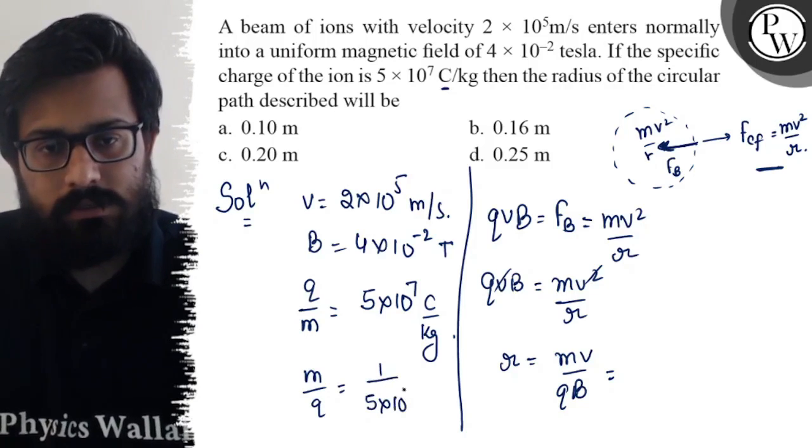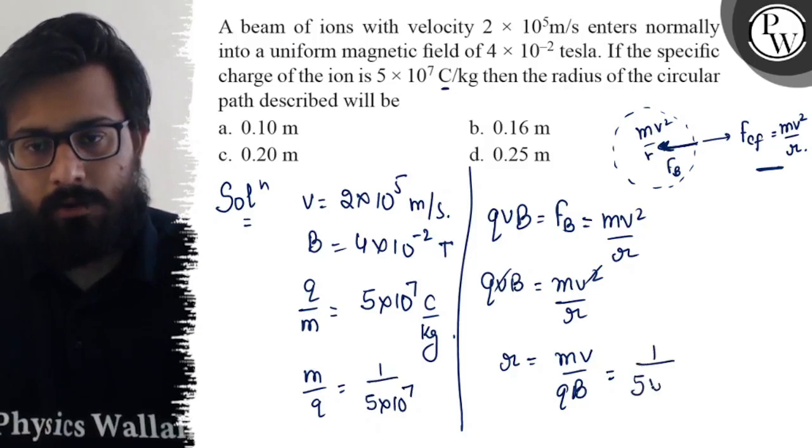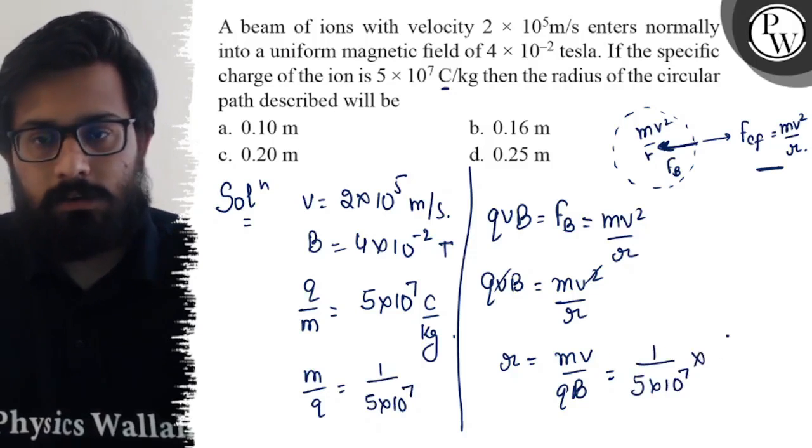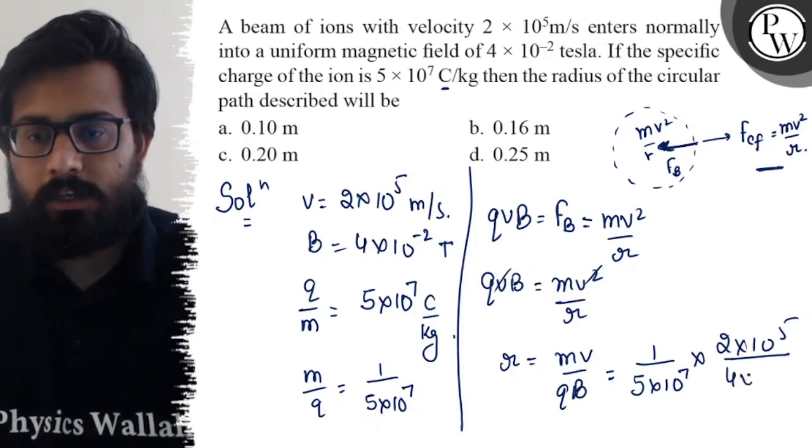So m/q can be written as 1/(5 × 10⁷), multiplied by velocity 2 × 10⁵, divided by the magnetic field which is 4 × 10⁻².